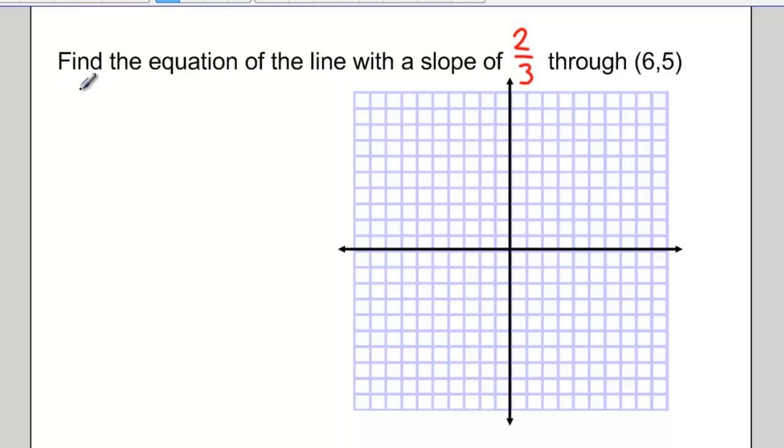Let's try another one. Find the equation of a line with a slope of 2 thirds through the point 6 and 5. Just to state our steps, we start by subbing in the slope. Then we sub in the point that we've been given. And then finally, we solve for b, for the y-intercept.